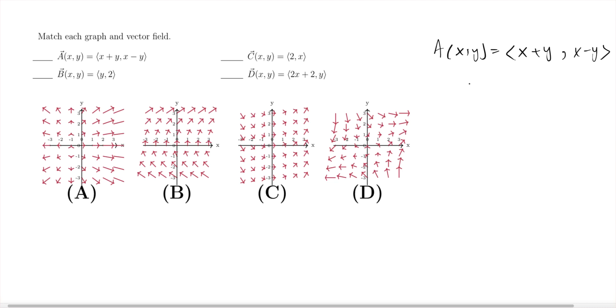Just have different x and y values and see which graph matches. For example, if I give (0,0), zero plus zero is zero, zero minus zero is zero.